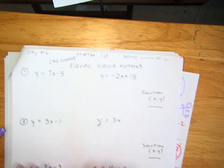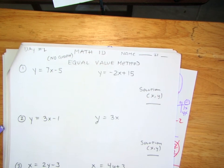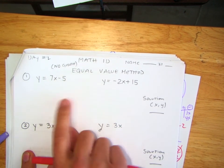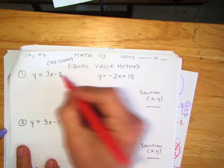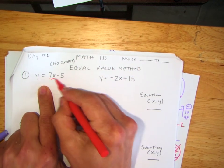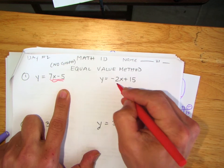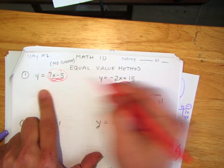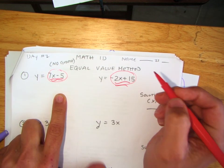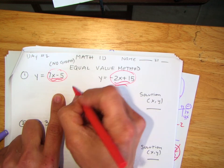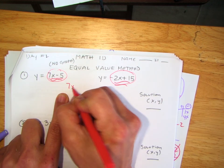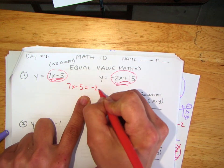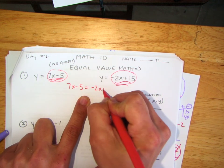So we got the equal value method. Again, both of the equations are equal to y, so I'm going to set both of the expressions equal to each other. So I'm going to put 7x minus 5 equals negative 2x plus 15.